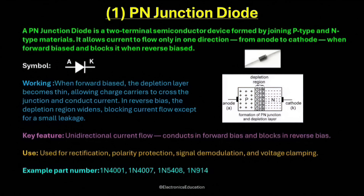This shows that a P-N junction diode conducts only in one direction, which is from anode to cathode. This property is called unidirectional current flow, and it is the key feature of a diode. It allows the diode to act like an electronic one-way valve, controlling the direction of current in a circuit.